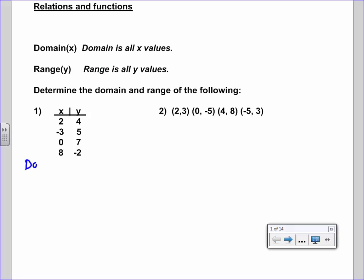Well for this you'd say okay, the domain is all the X values: 2, negative 3, 0, and 8. And the range is all the given Y values: 4, 5, 7, and negative 2. And if by chance a value showed up twice in either the domain or the range, you don't have to write it twice.